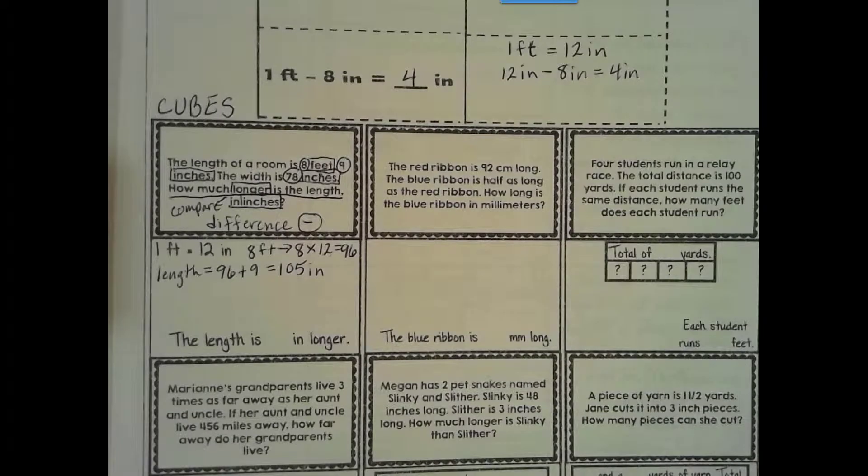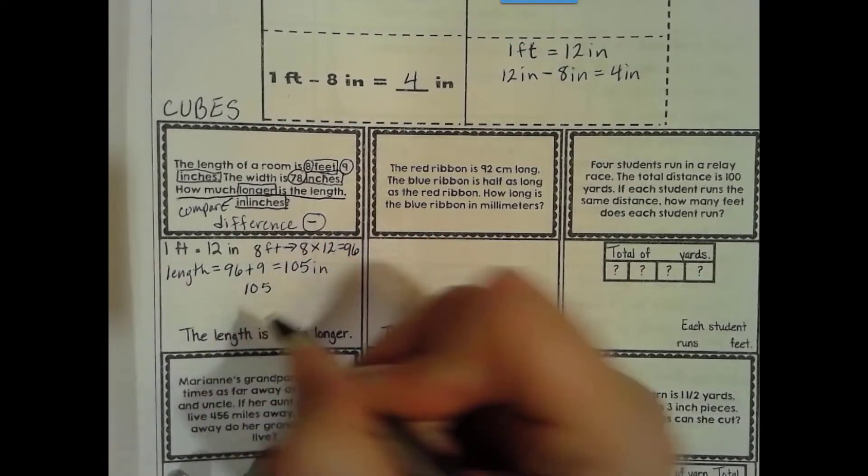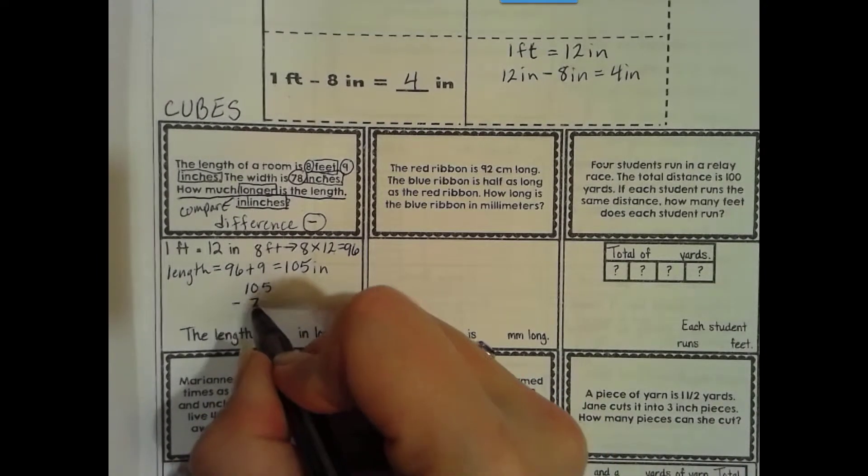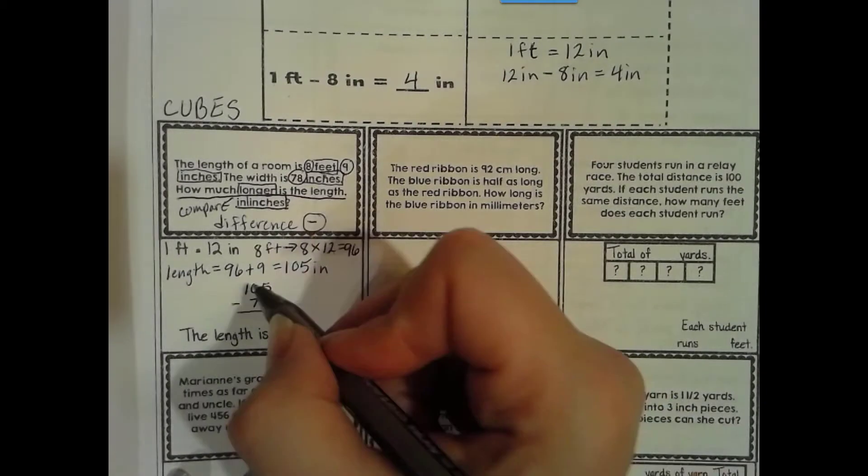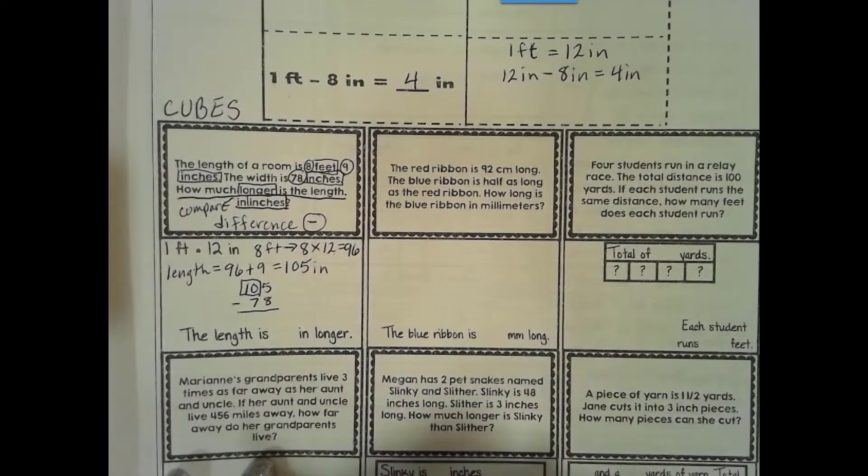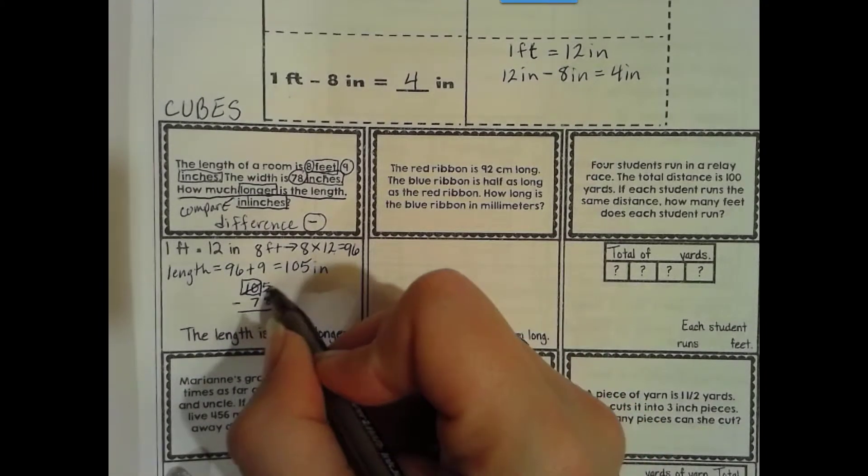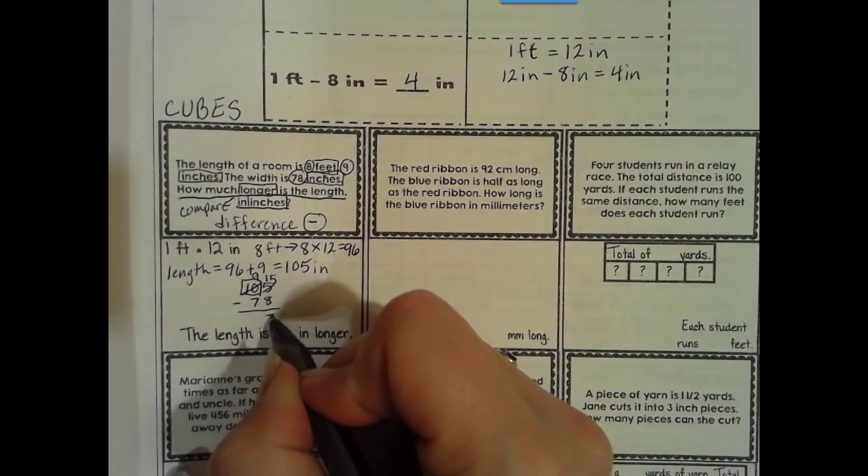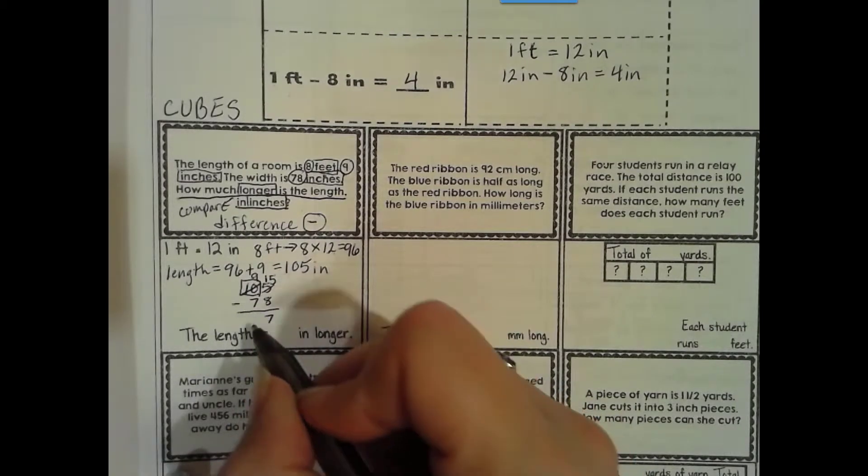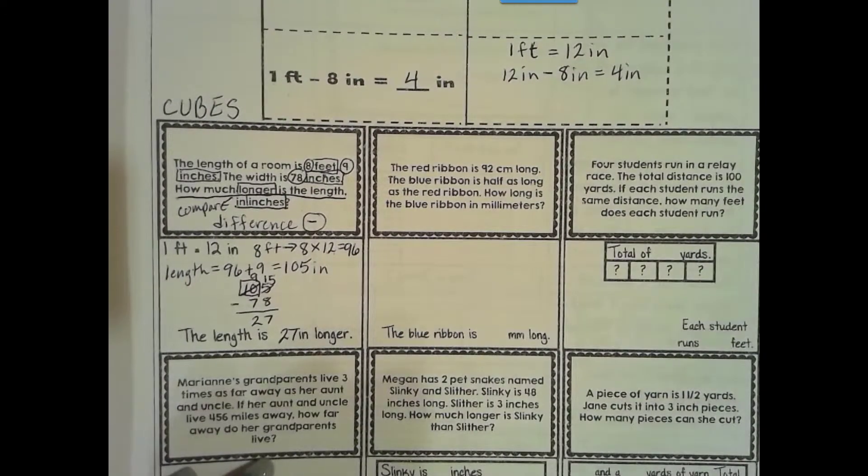So now that we know our length in inches, now we can subtract. So there was a step we had to do first. So 105, and our width is 78. Okay, we have more on the floor. Go next door, regroup 10 more, but there's nothing there. I do have 10 tens in 100, though. So I could take away one 10 from here and give it here. And then I'm left with 9 tens. 15 take away 8 is 7. 9 take away 7 is 2. So the length is 27 inches longer.